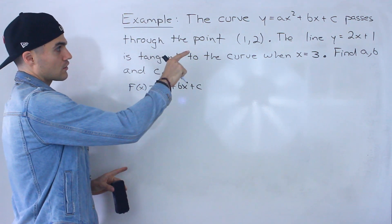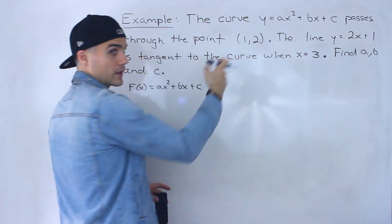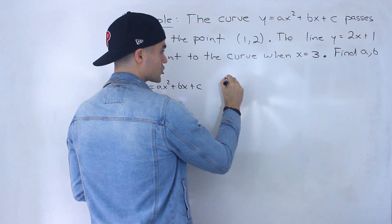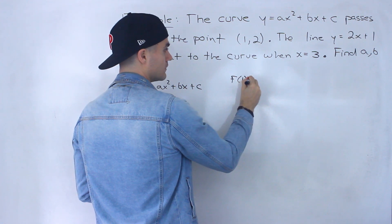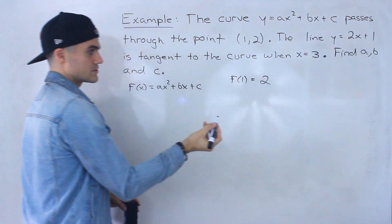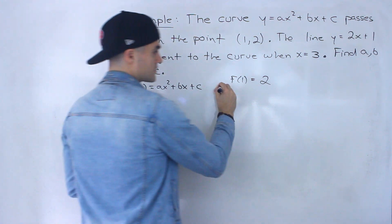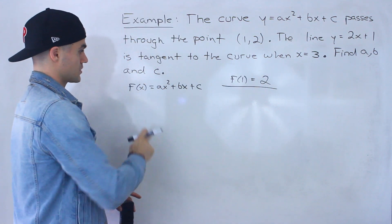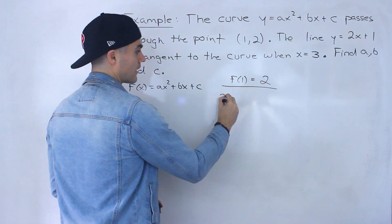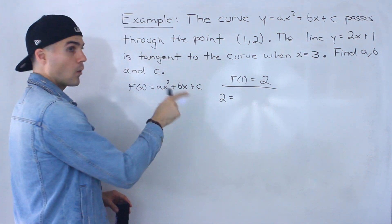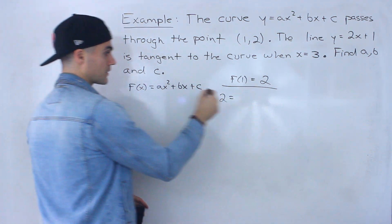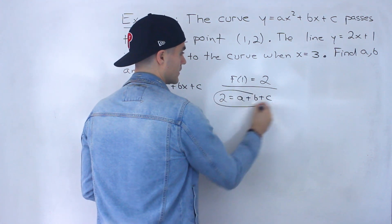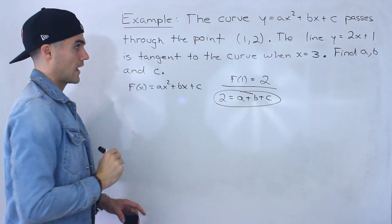We know that this curve is going to pass through the point (1, 2). So we definitely know that f of 1 is equal to 2. We can make an equation from that — our first equation. We plug in 2 for the y value and 1 for all the x values, and we end up with a plus b plus c equals 2.